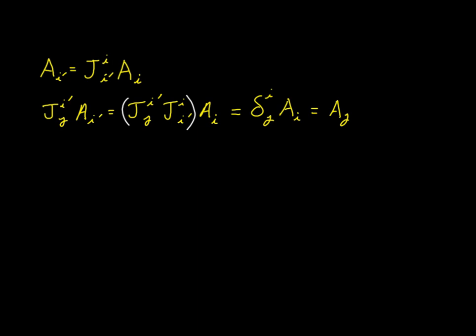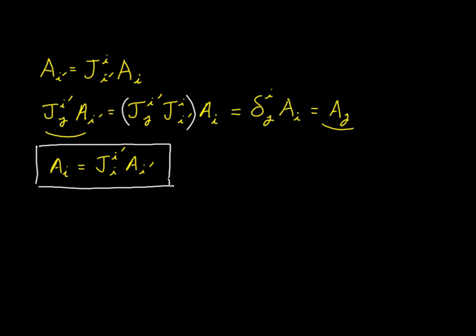Now that we've got this, we can switch sides of the equation and at the same time rename the indexes, making j equal to i. So taking this to the left side and making it a_i, on the right side we'll have J i-prime, i times a_i-prime. We again have a covariant transformation, only this time it's from the prime system to the unprimed system. Up here we had a covariant transformation from the unprimed to the prime system. So this relationship of the Jacobian with its inverse allows us to invert the perspective from unprimed-to-primed to primed-to-unprimed.